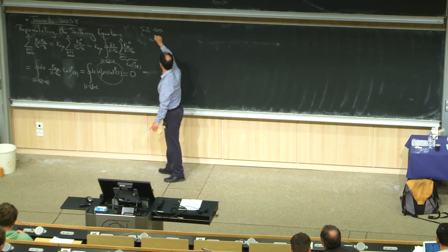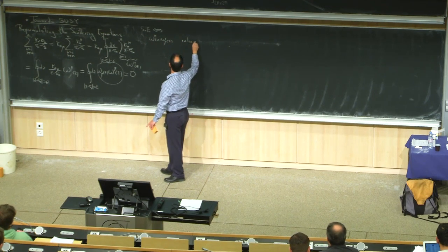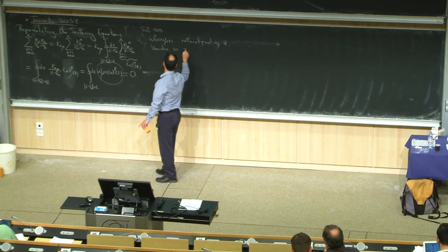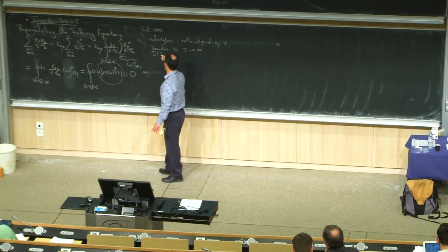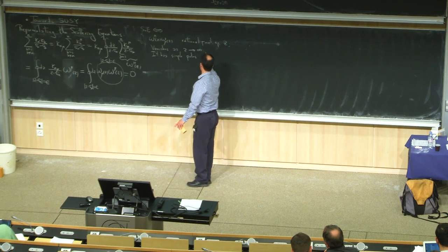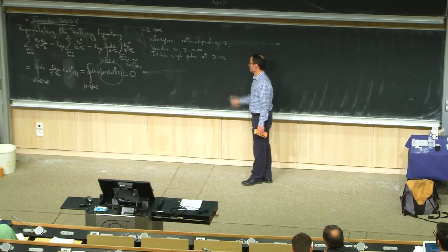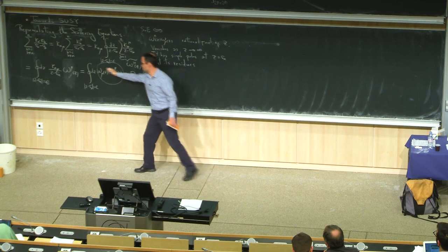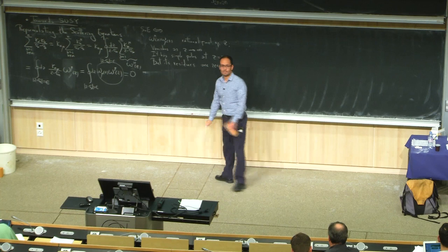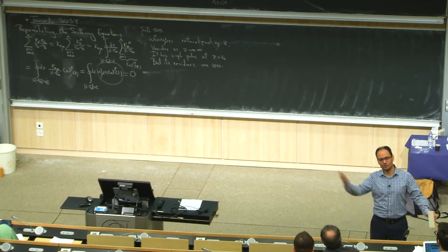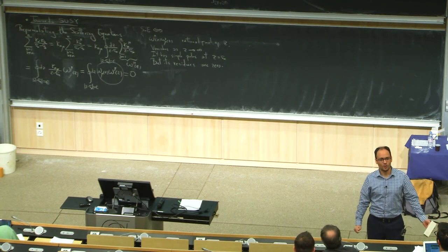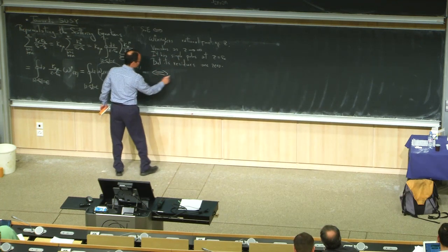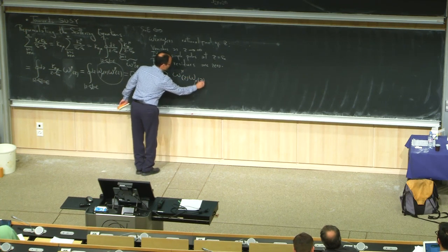So we have a rational function of z that vanishes as z goes to infinity, has simple poles at the location of the punctures, but has zero residue at every pole. What could this function possibly be? A rational function that vanishes at infinity, has only simple poles, and all residues are zero — the only possibility is that this function is identically zero.